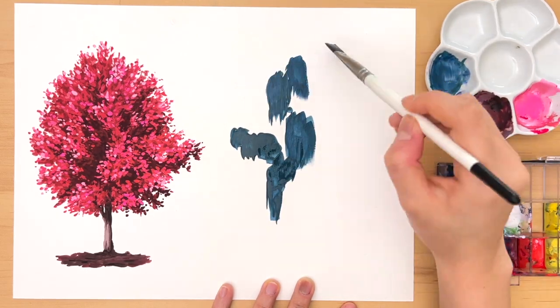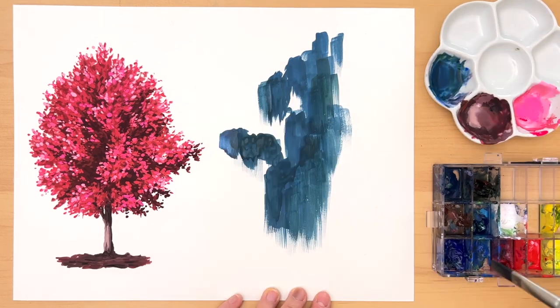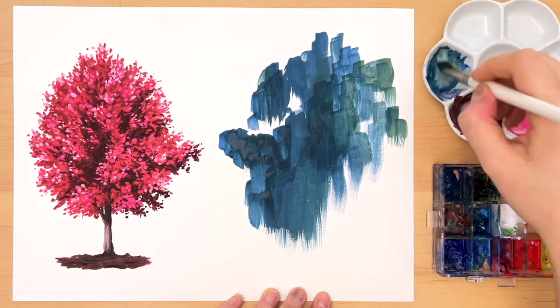So I'm starting out again by blocking in the silhouette of the tree, making sure that the silhouette actually reads as a willow tree.